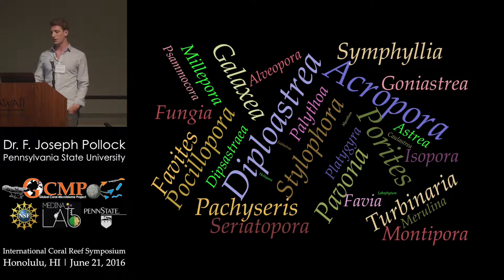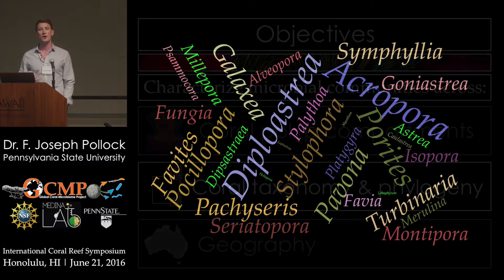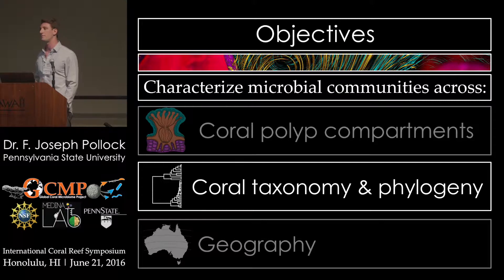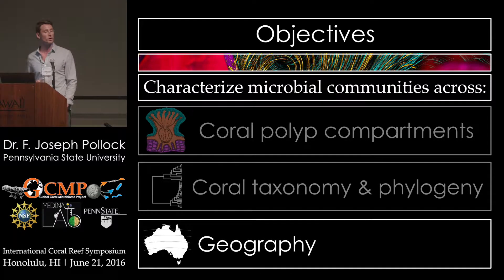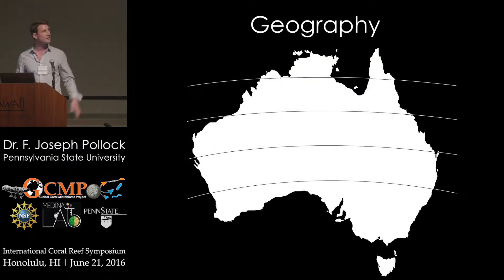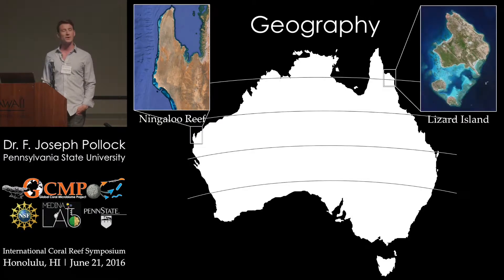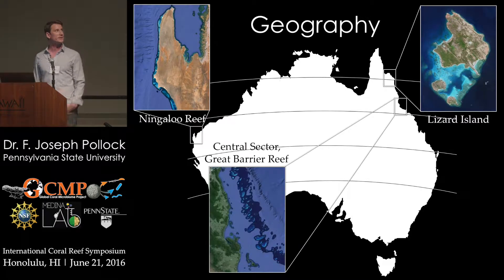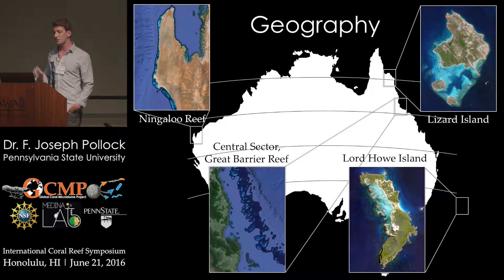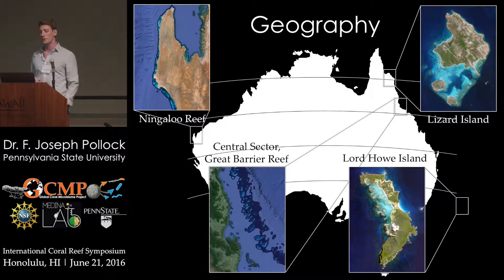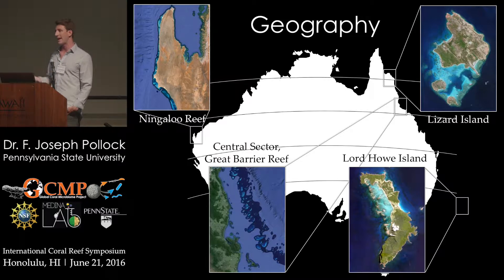We also want to know what's the role of geography and environment in structuring these microbial communities. To address that question, we sampled from reefs all around Australia. We collected samples from Western Australia and Ningaloo Reef, as well as a latitudinal gradient spanning from Lizard Island in the north to the central sector of the Great Barrier Reef, all the way down to Lord Howe Island, which is the world's most southern coral reef — spanning 17 degrees of latitude. To get an idea of seasonality, we also sampled corals from Lizard Island and the central sector both in summer and winter.